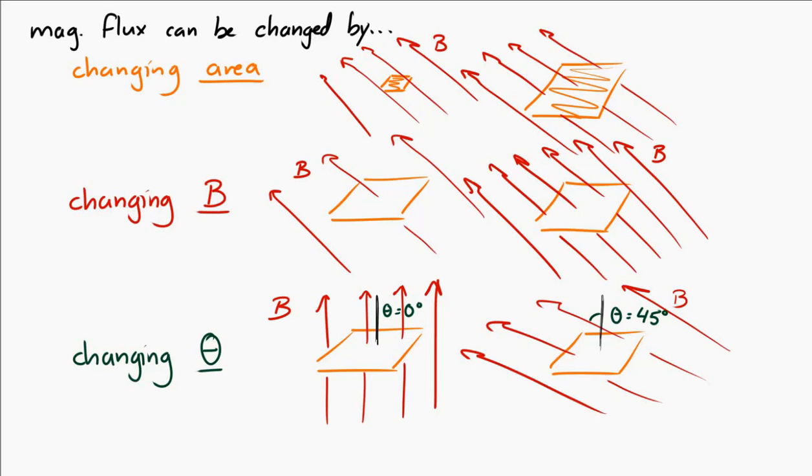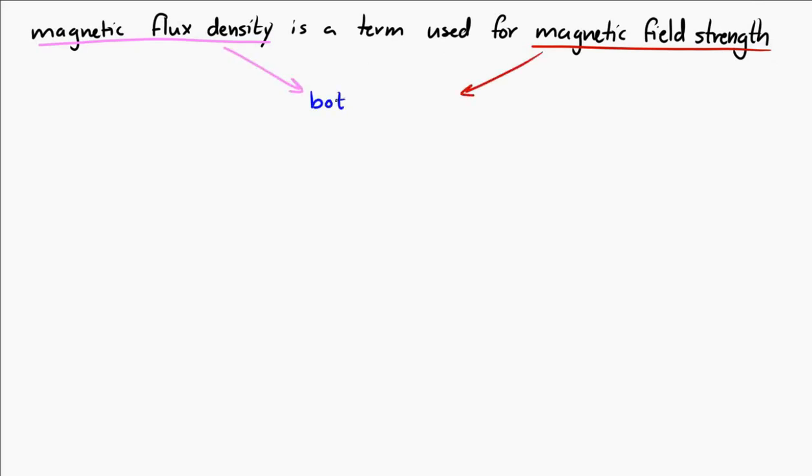I'm also going to define a new term called magnetic flux density. Magnetic flux density is a term that's used to refer to the magnetic field's strength. In other words, this thing that we've been calling B, or representing with the letter B, can be called either the magnetic field's strength or the magnetic flux density. Those two terms mean the same thing.